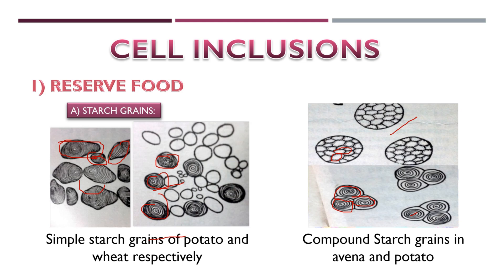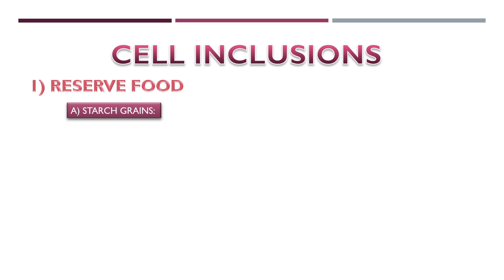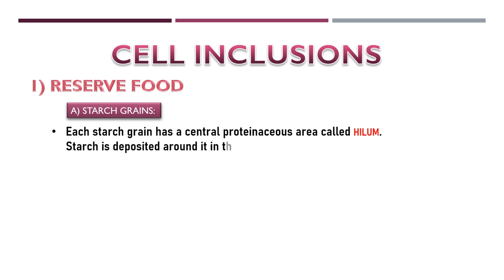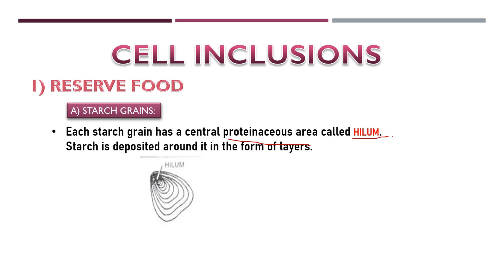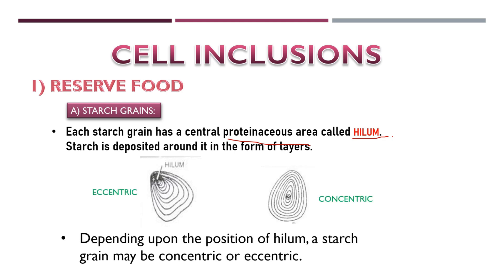A potato is an example of simple starch. Each starch grain has a central proteinaceous area called the hilum. Around the hilum there are concentric or eccentric layers of starch deposit. We can see that the hilum may be eccentric or concentric depending on the plant.